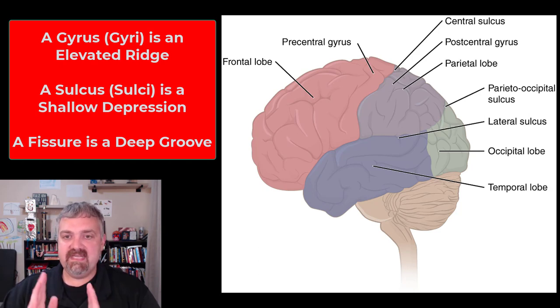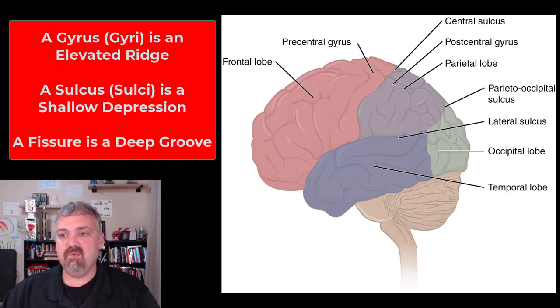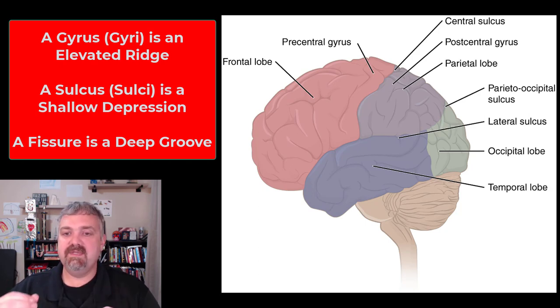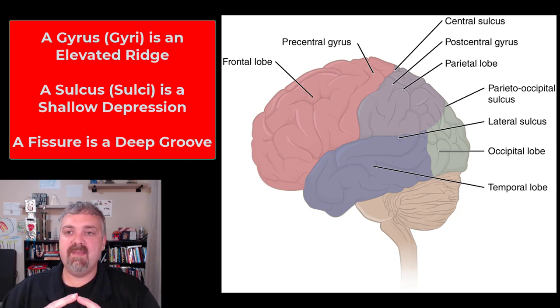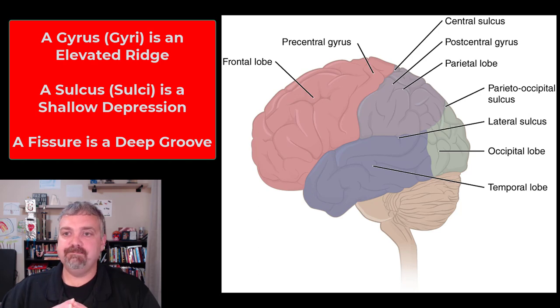There is also a deep groove called the longitudinal fissure, which I'll show you in a separate video. So sulci and gyri allow you to have more grey matter, to have more neurons.